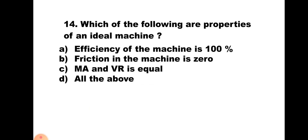Question number 14: Which of the following are properties of an ideal machine? A) efficiency is 100%, B) friction is 0, C) MA and VR are equal, D) all the above. For an ideal machine there is no friction, so efficiency is 100%, friction is 0, and MA equals VR. Therefore the correct answer is D) all the above.